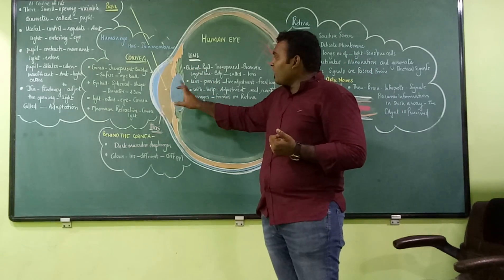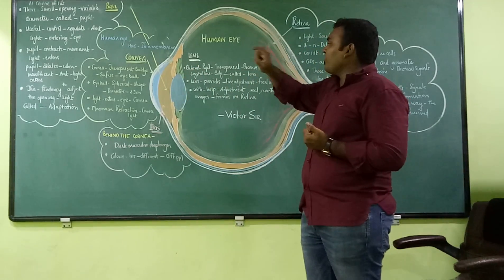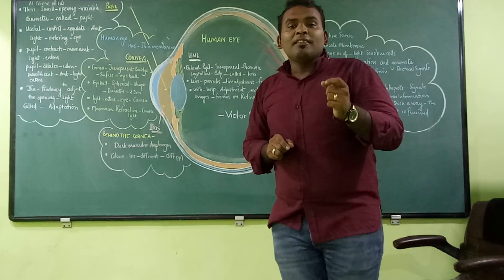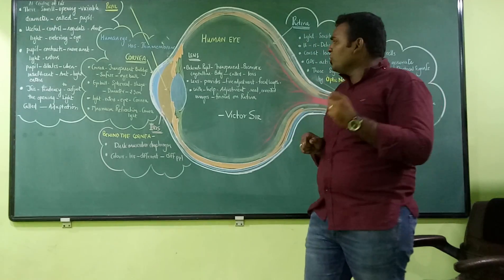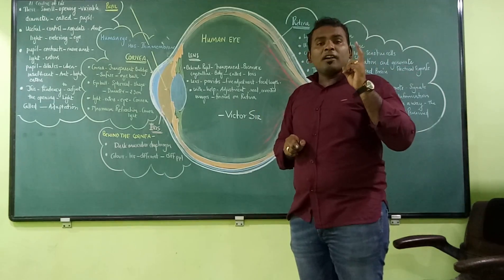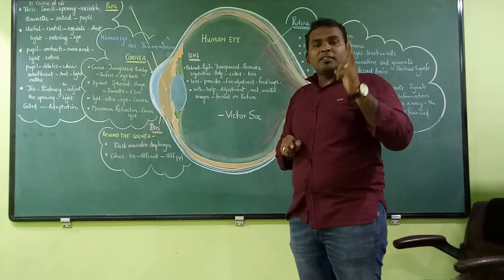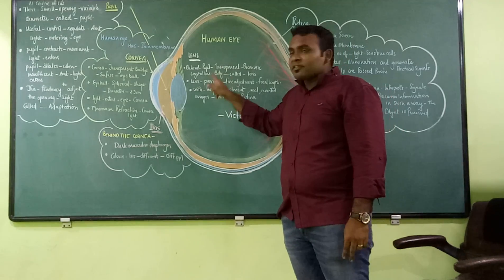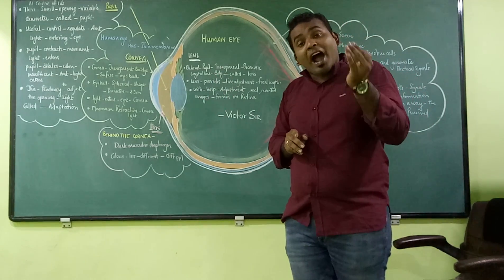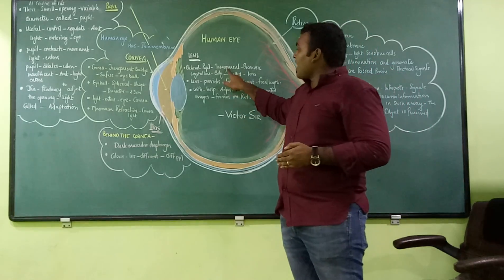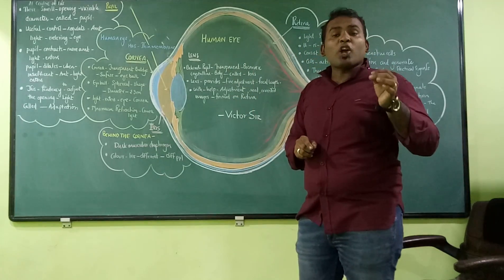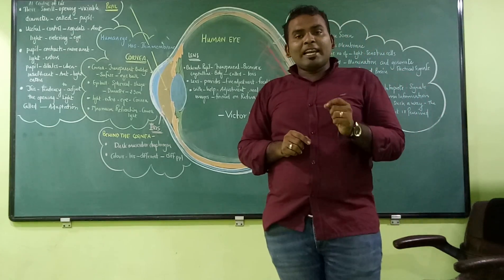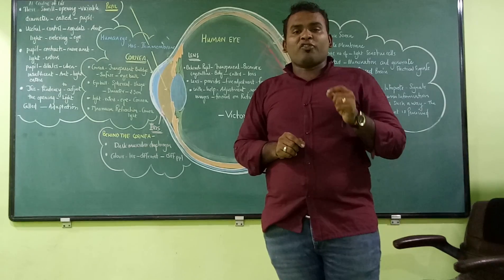Behind the pupil, you have a transparent biconvex crystalline body which is called the lens. Just like a lens made up of two spherical surfaces, you have a lens present in your eyeball as well. The function of this lens is to provide fine adjustment of focal length.